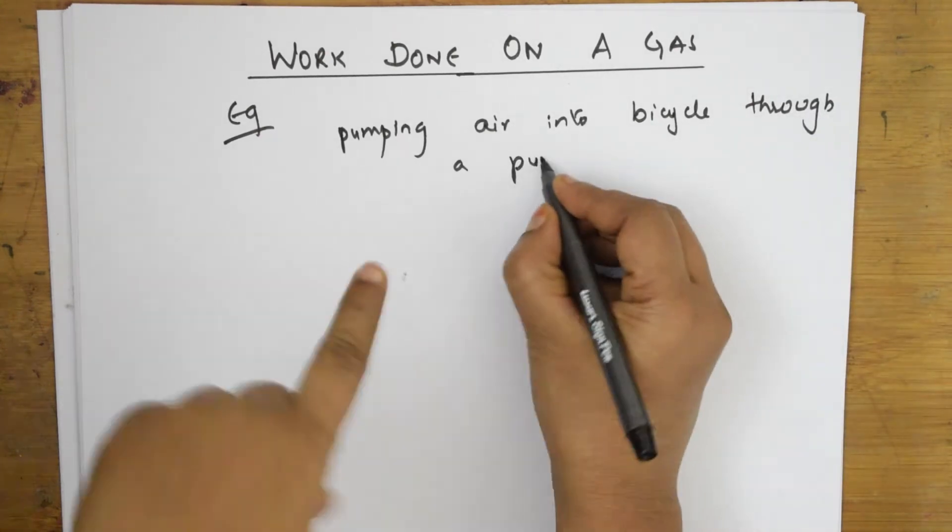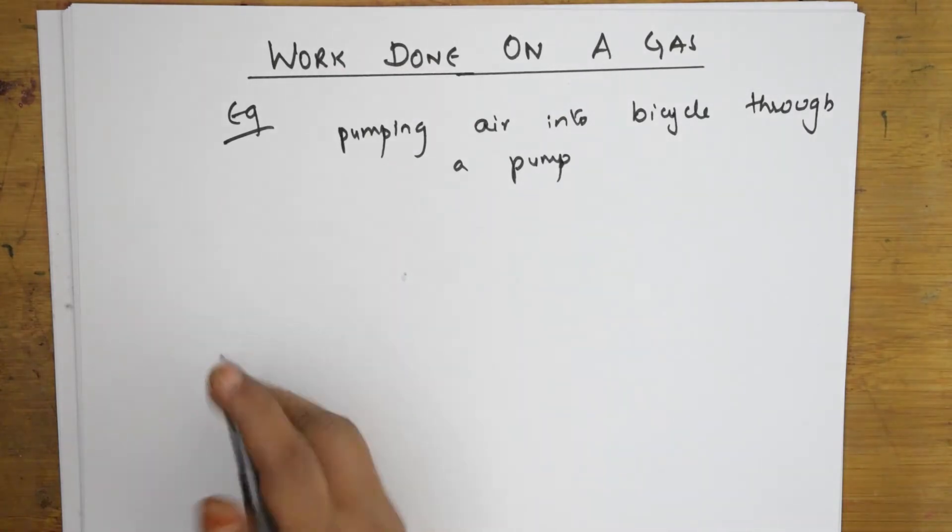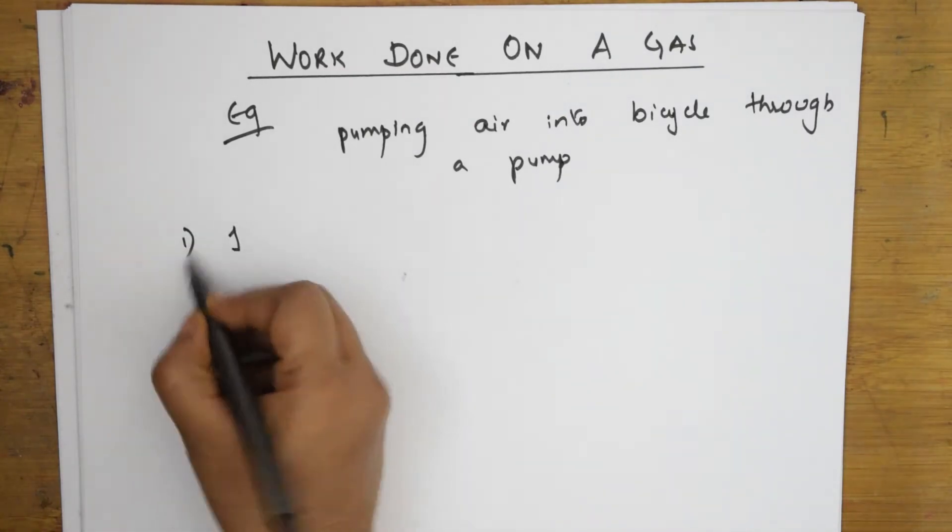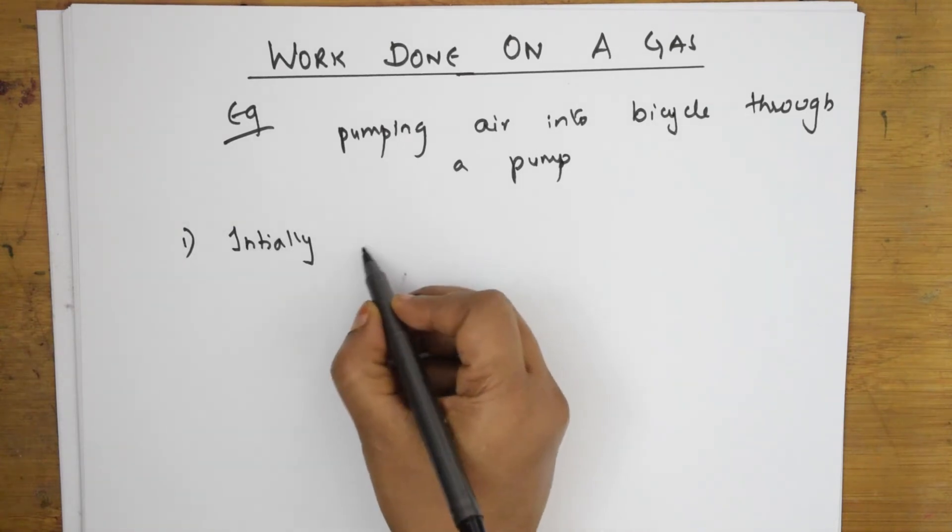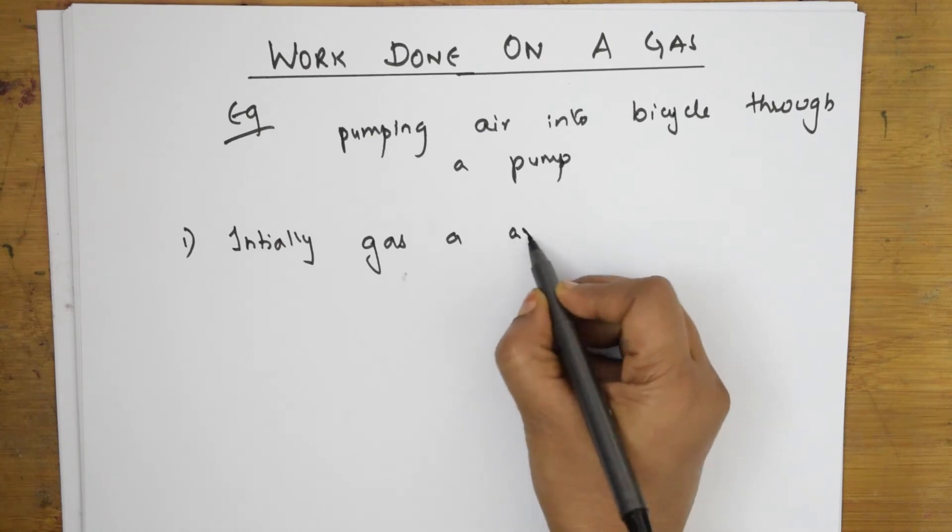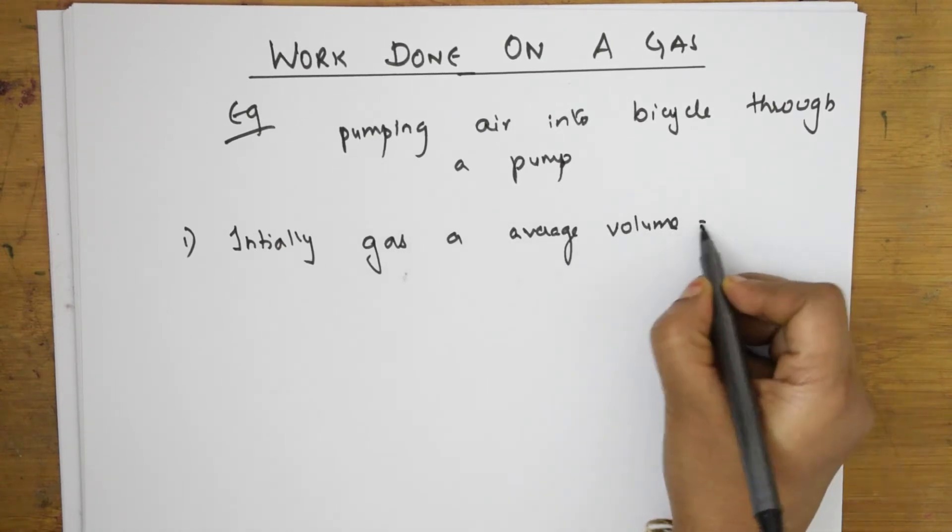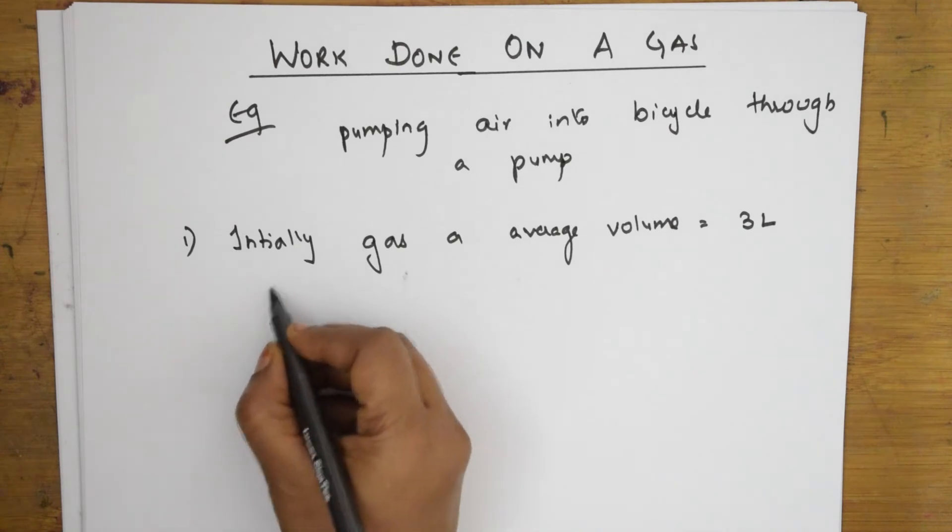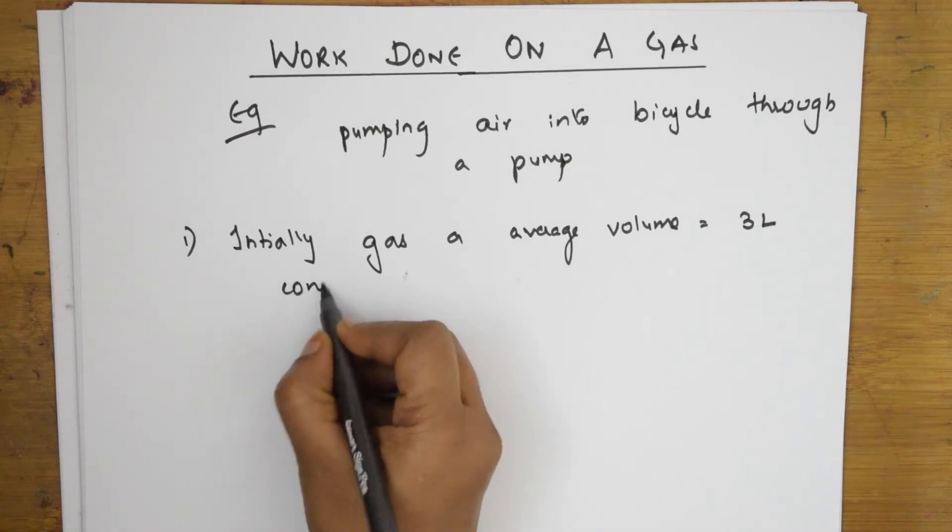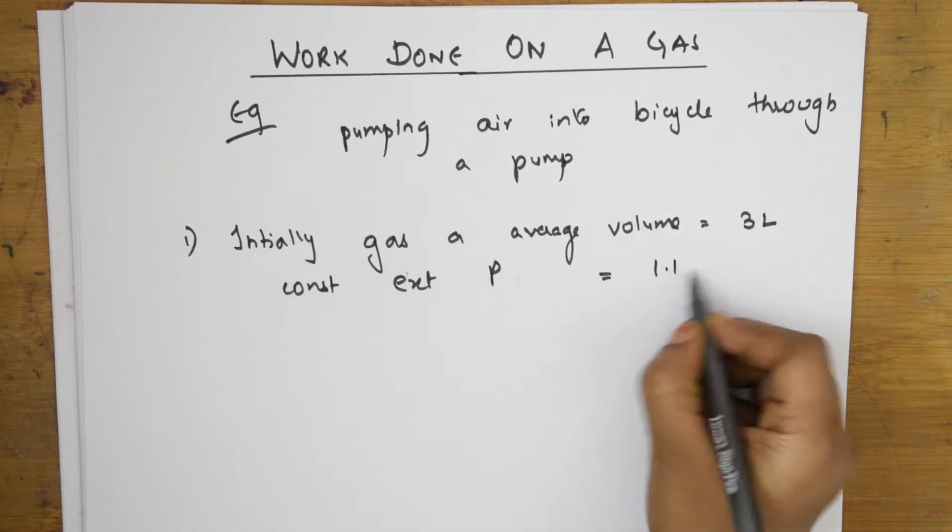Through a pump. Pumping air. I am filling it. So, initially, let us take a pump. Initially, gas has an average volume which is equal to 3 liters. Now, external pressure. Constant external pressure which is equal to P external. That is nothing but 1.1 atm.